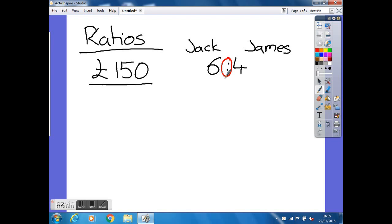The first thing we've got to do is to understand what these mean. So what this basically means is that Jack is getting six parts of this money. We don't know how much one part is worth yet but we know that Jack is getting six parts and we know that James is going to be getting four parts. The first thing we have to do is to work out how much one part is worth before we can work out how much they get.